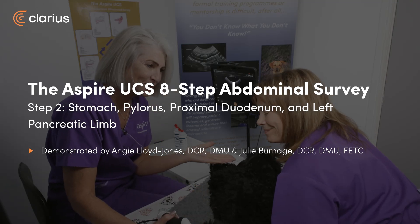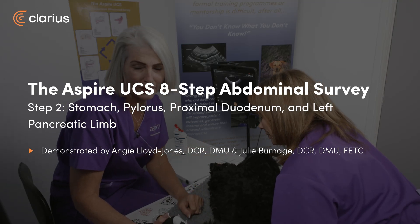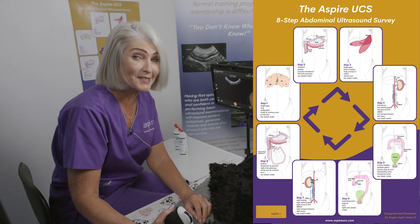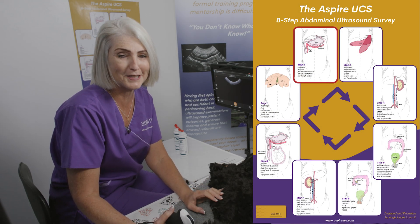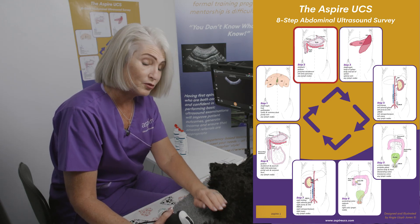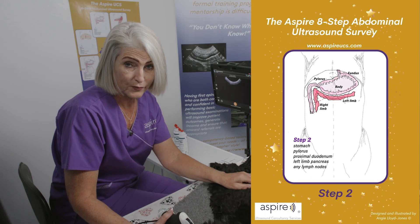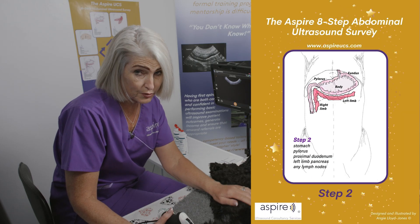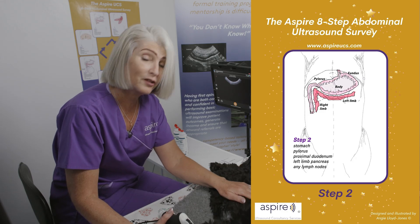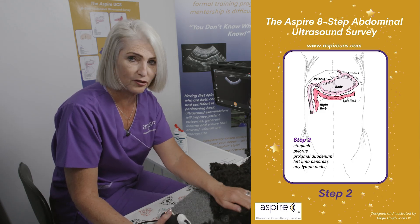Hi, I'm Angie, this is Julie, this is Oti and we're SPI Ultrasound Consultancy Services. Today we're going to go through step two of our eight step abdominal survey. Step two includes the stomach, the duodenum — the proximal duodenum and the pylorus — and hopefully, if we can see it in Oti, we're going to tell you how you can locate the left limb of the pancreas.